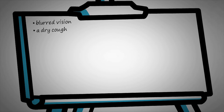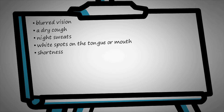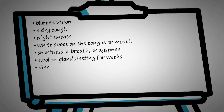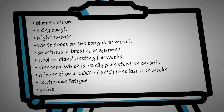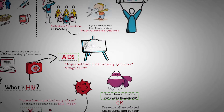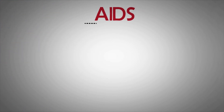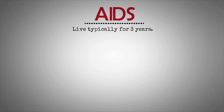Symptoms of AIDS can include blurred vision, a dry cough, night sweats, white spots on the tongue or mouth, shortness of breath or dyspnea, swollen glands lasting for weeks, diarrhea which is usually persistent or chronic, a fever of over 100°F (37°C) that lasts for weeks, continuous fatigue, and unintentional weight loss. Without treatment, people with AIDS typically live for around 3 years after diagnosis. However, by taking other medications alongside HIV treatment, a person with AIDS can control, prevent, and treat serious complications.